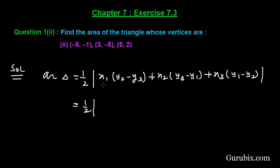x₁ is -5, so we write -5 here. y₂ is -5, y₃ is 2, so we have -5 - 2. x₂ is 3, y₃ is 2, y₁ is -1. If we subtract -1 from 2, we get +1, making it 2 + 1.